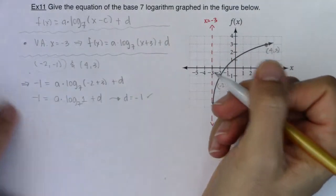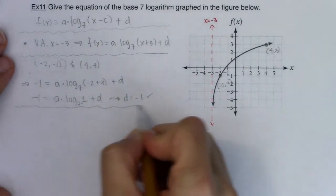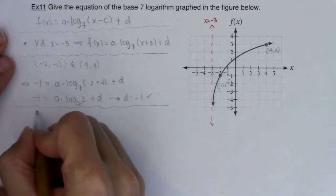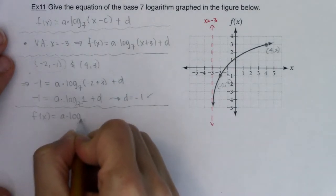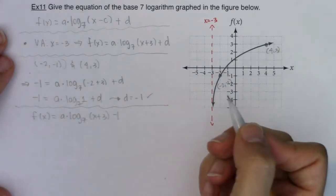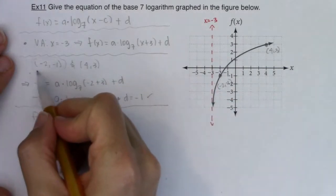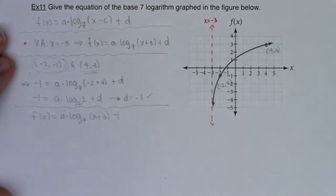Let's see where we are so far. If D is equal to negative 1, now I'm looking at f(x) equaling A times log base 7 of (x + 3) minus 1. I got that just from using this point. I still have this point to go, so let me plug 4 in for x and 3 in for y and see what that gives me.